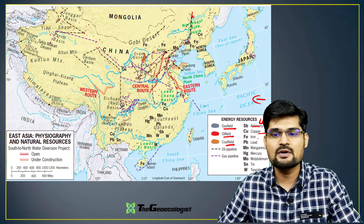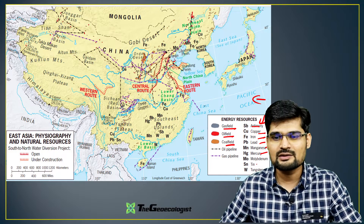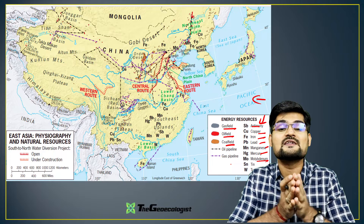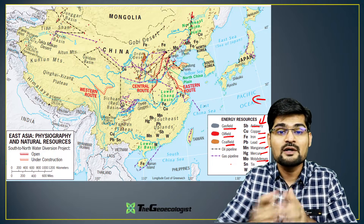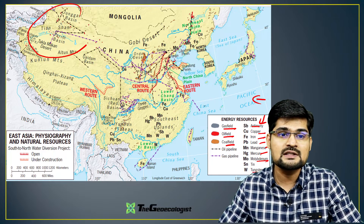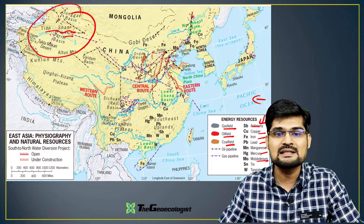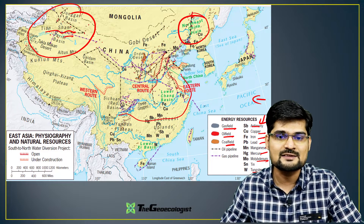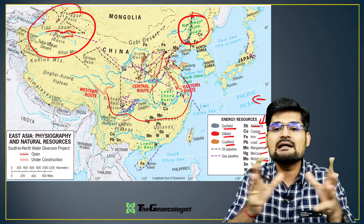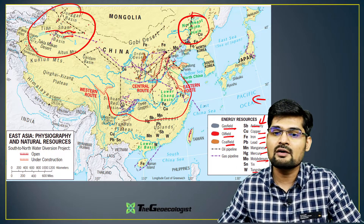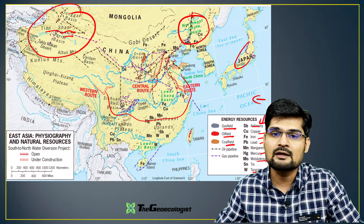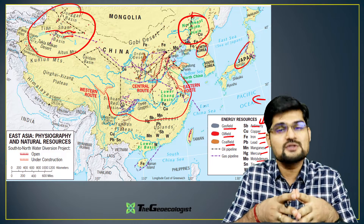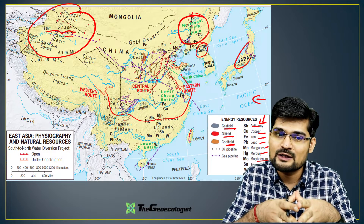In terms of metals, you have antimony, copper, iron, lead, manganese, mercury, molybdenum, tin, and even tungsten found in this realm — from the western portions in the Tian Shan belt and Tarim Basin to the northeastern portions of China, as well as eastern portions. Taiwan, Japan, and some portions of North Korea are also endowed with rich mineral and oil resources.